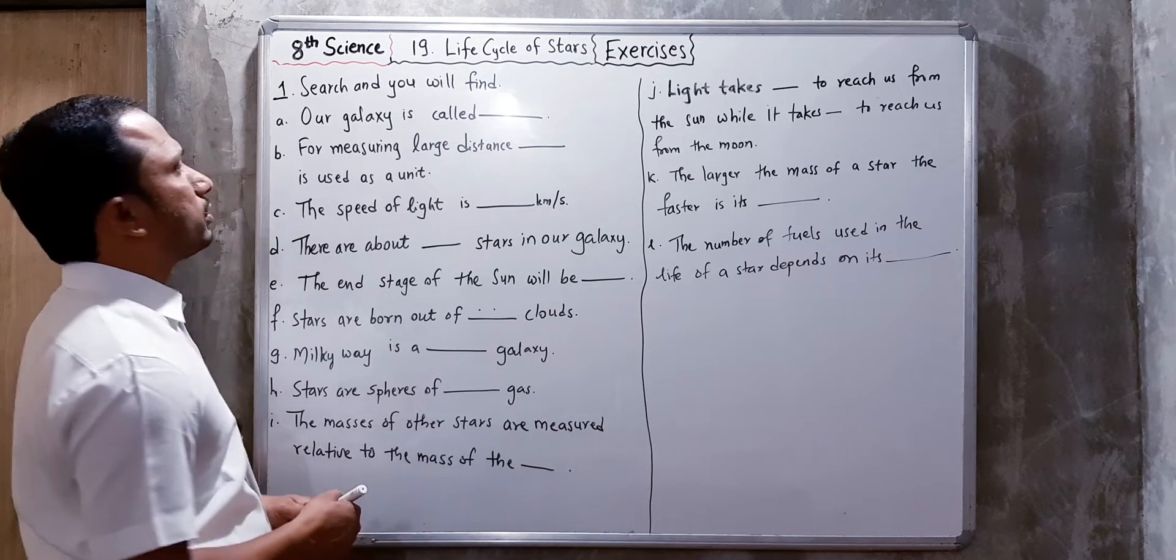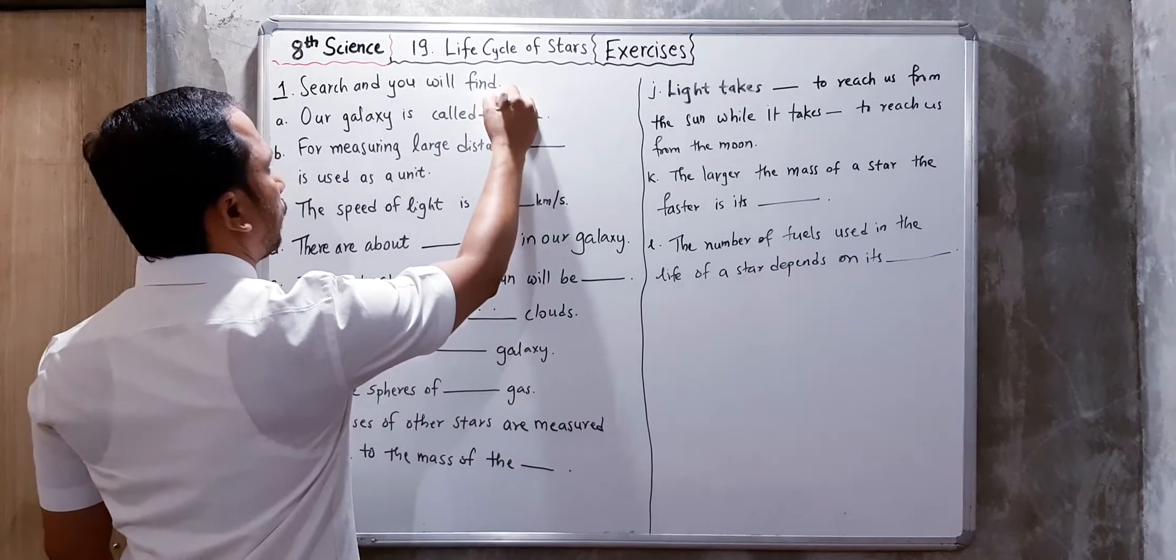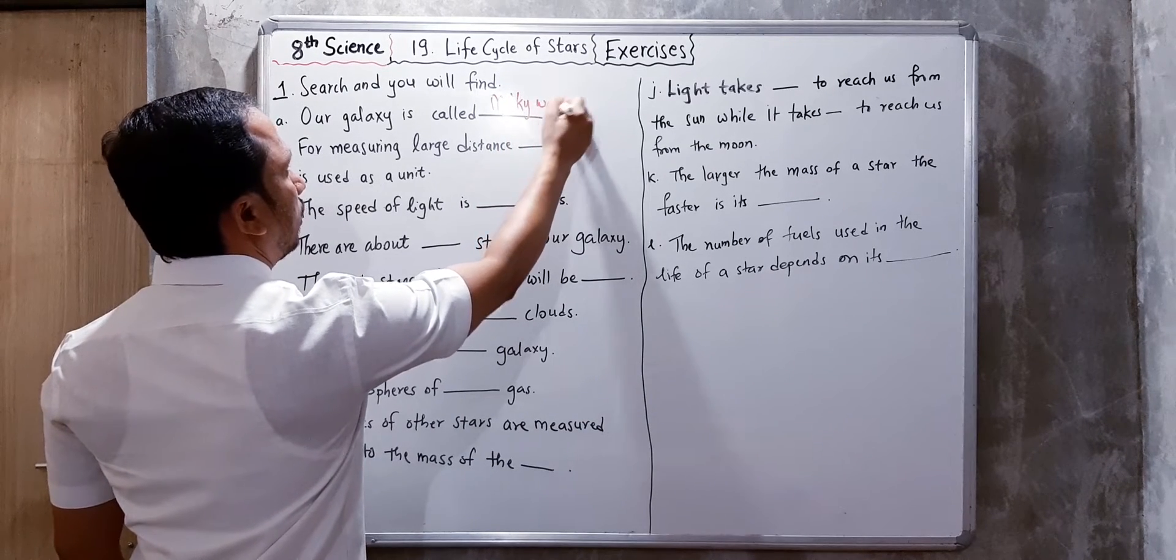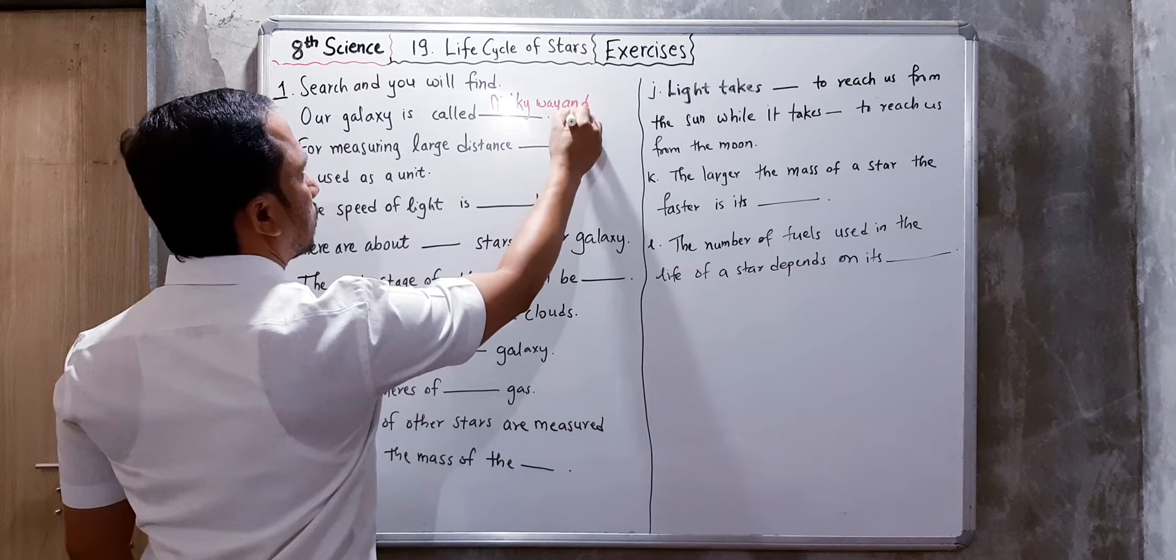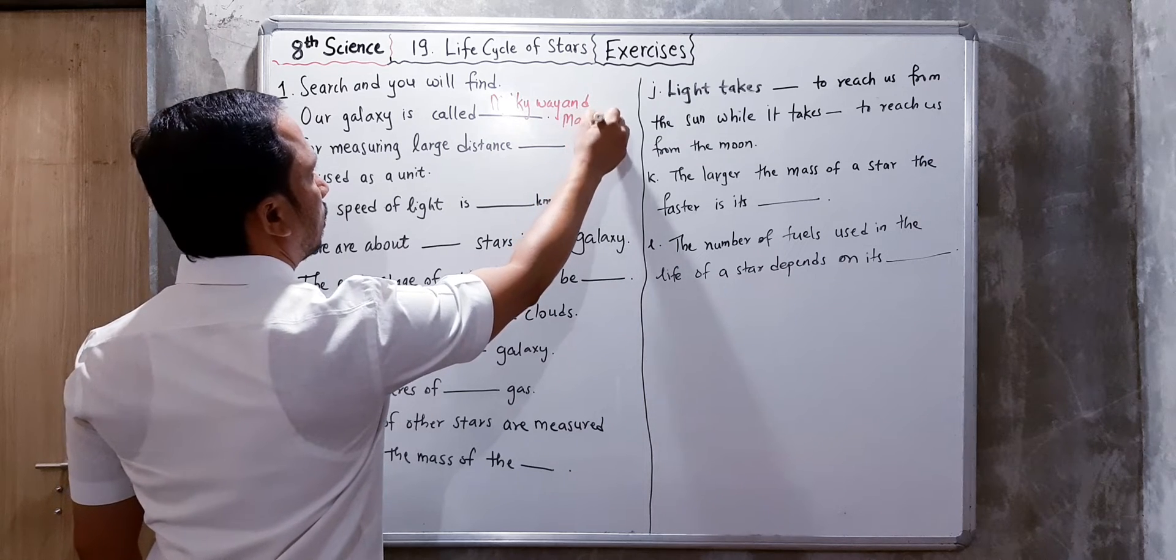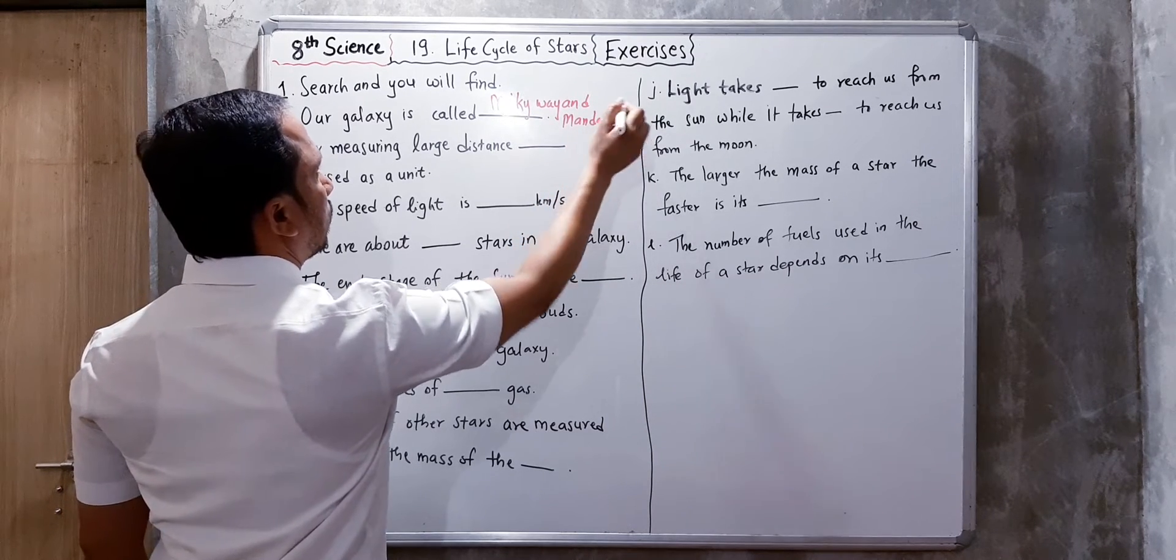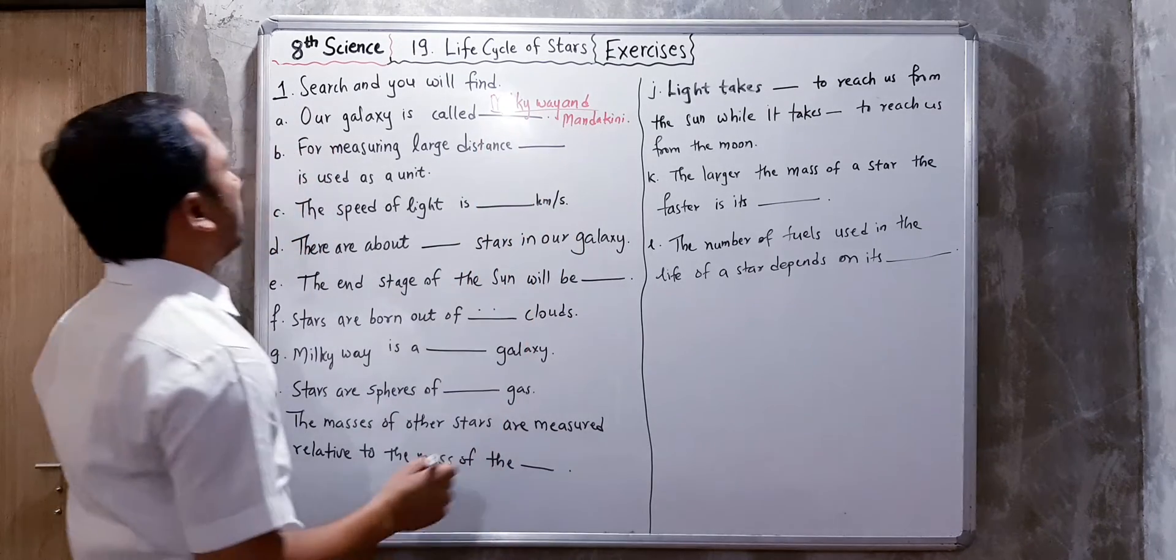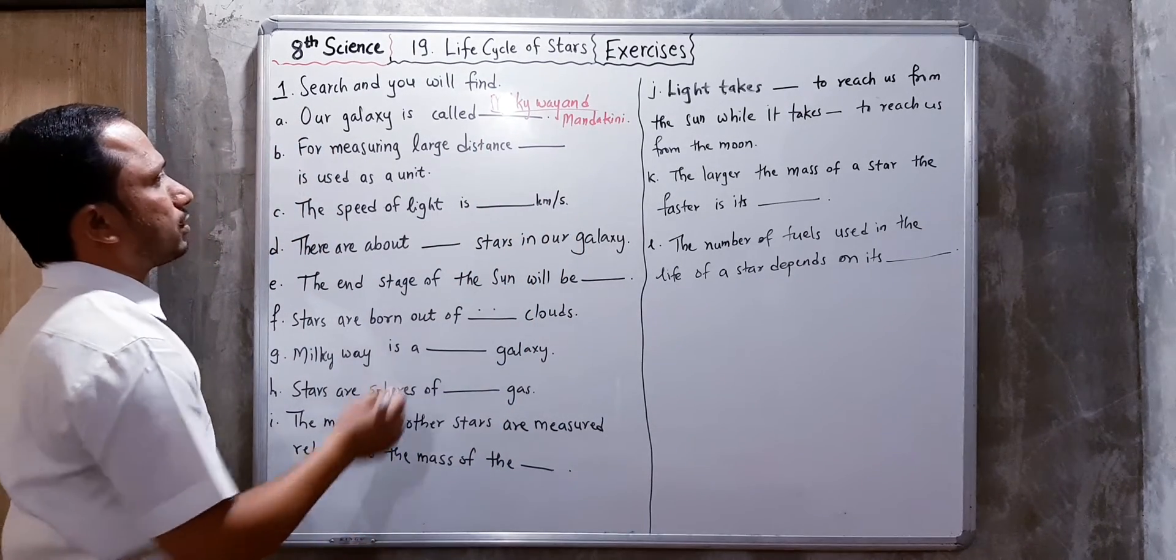Our galaxy is called Milky Way and Mandakini. These two names are Milky Way and Mandakini. For measuring large distances, the light year is used.